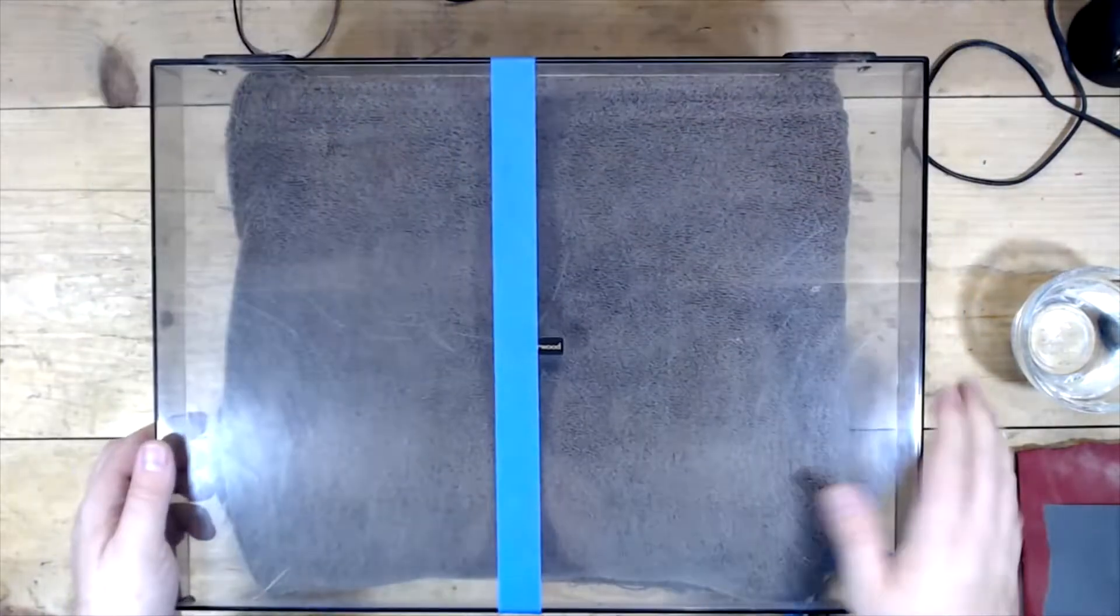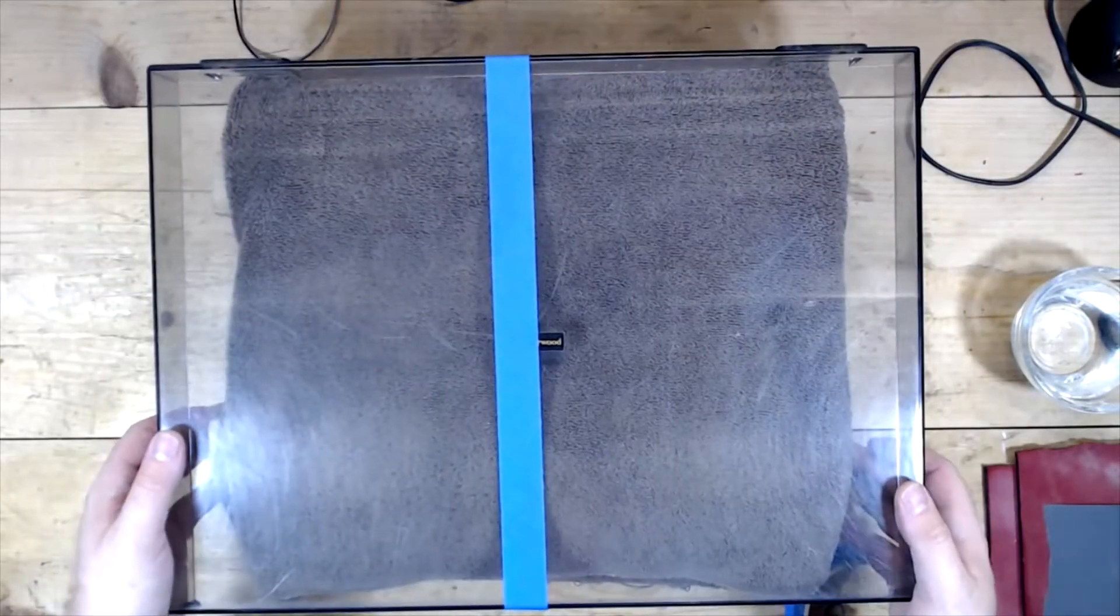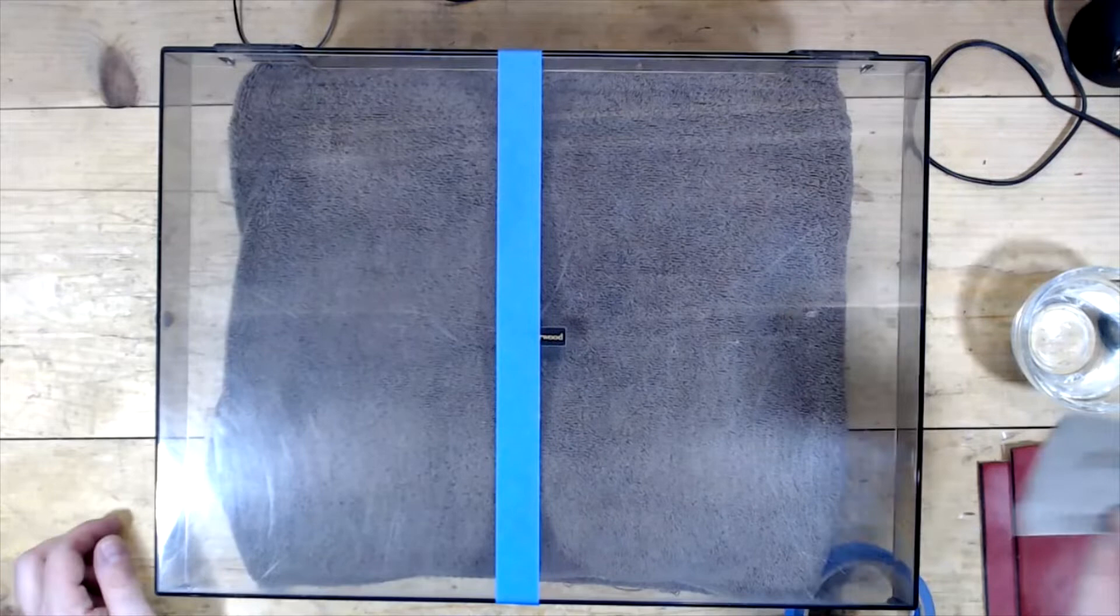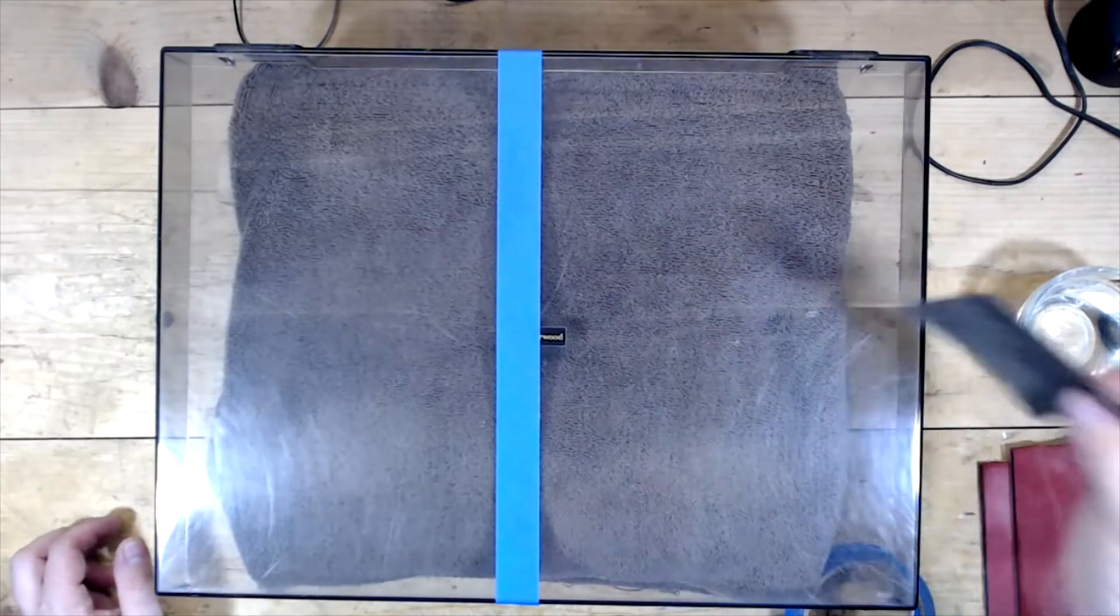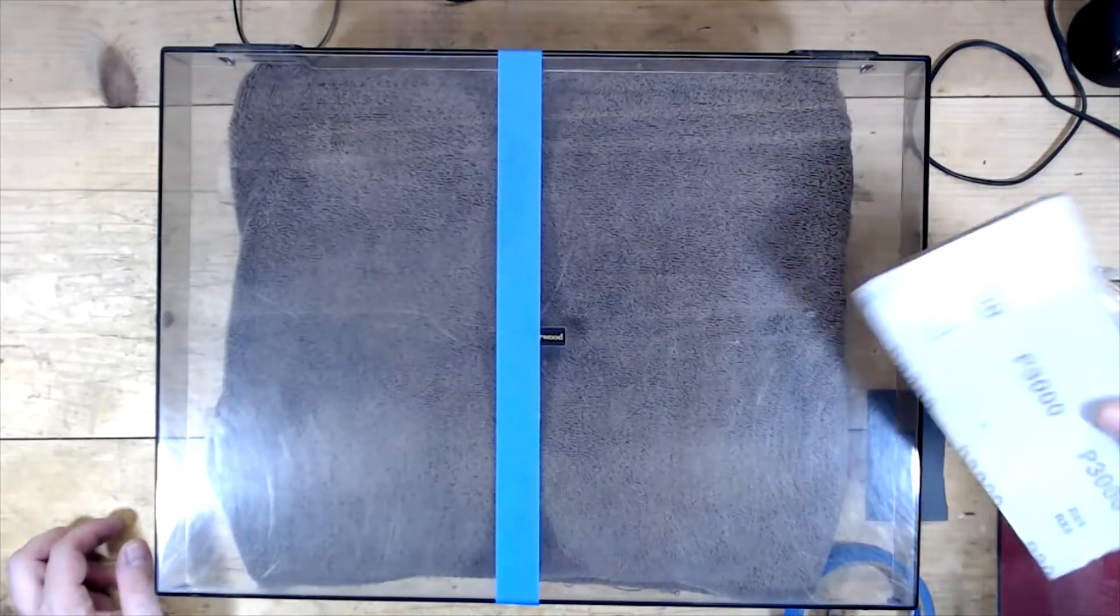Hit it with some Windex first, clean it off, and then get started. Now what I'm going to do initially is wet sand with 2000 grit—so this is the 2000 grit paper.